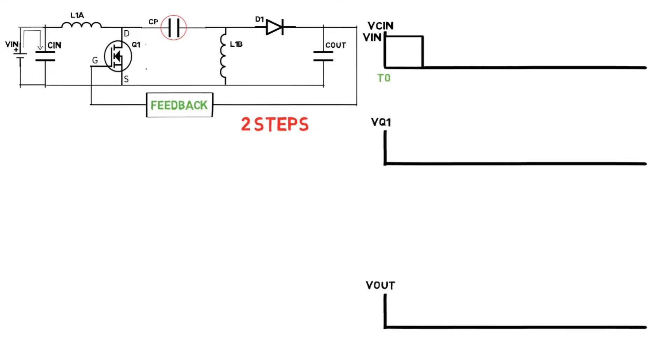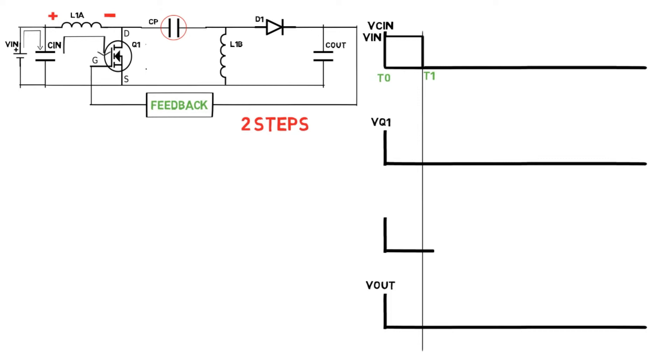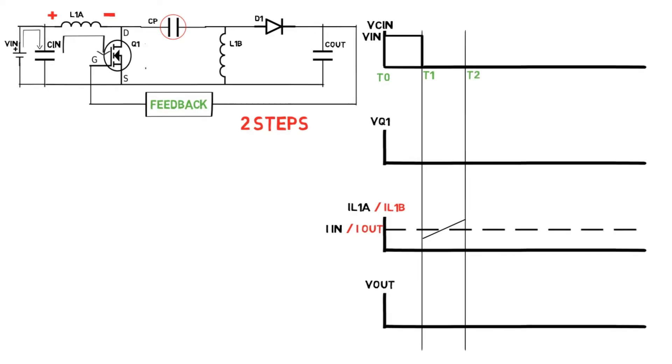At time T1, Q1 is turned on. The input capacitor gets discharged through this path and it will charge the inductor with polarity shown in the figure. It will charge up to peak current, and remaining circuit will stay as it is due to the same reason.